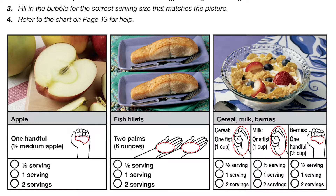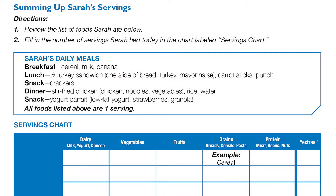Let's begin with the first picture — apple. Here we have one handful, which is the same as half a medium apple. Is this half a serving, one serving, or two servings? When you have your answer, go ahead and fill in the bubble with an X and continue with the rest of the questions on page nine. You can pause the video here to give yourself time to answer each question. All right friends, great job — let's go ahead and move on to page 10.